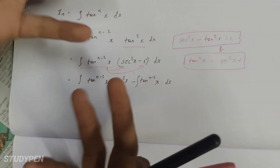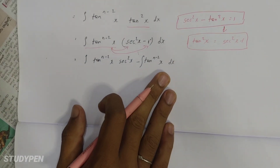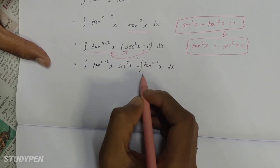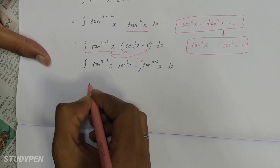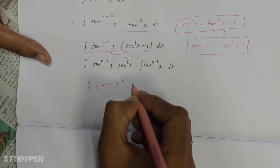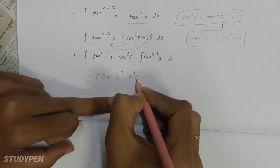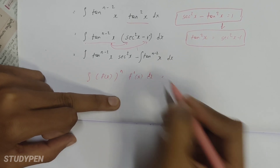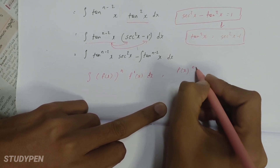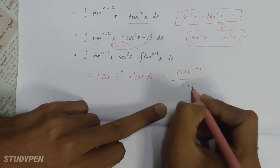These are very important points. If you have a direct formula, you can use this formula. Next, you can use the formula: integral of f(x) whole power of n times f dash of x dx is equal to f(x) whole power of n plus 1 by n plus 1 plus c.